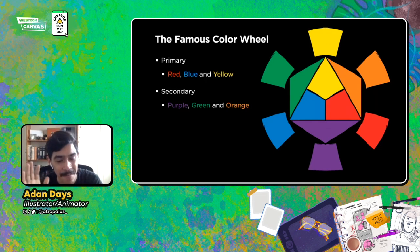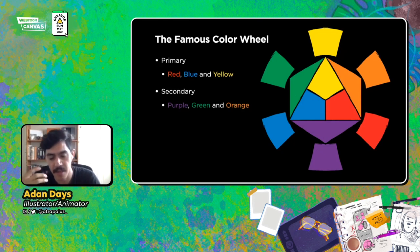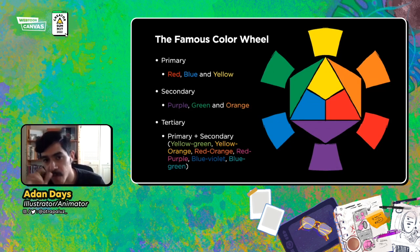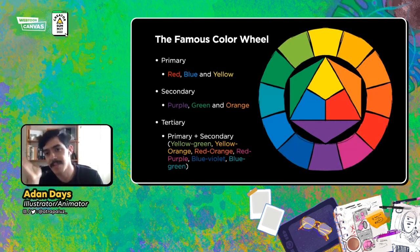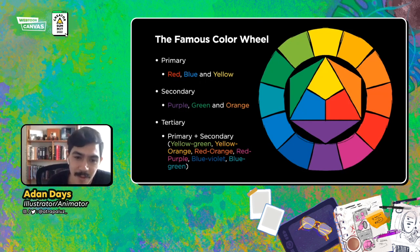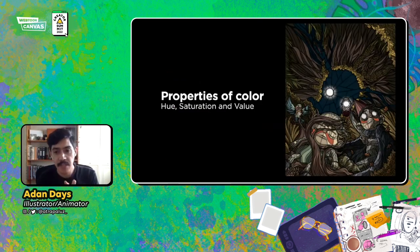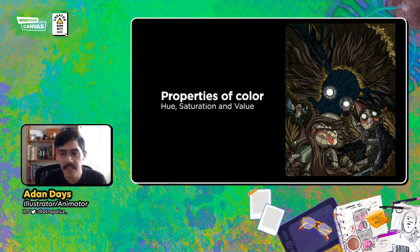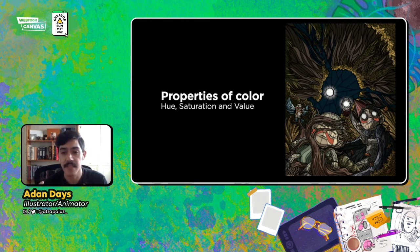Don't get too worried about memorizing all of this because it doesn't work like that — it's not helpful just to memorize it. The tertiary colors are the mix of one secondary and one primary color to fill in the gaps. It was easier for me to understand color by understanding that light is color and color is light. I strongly suggest you dissect colors into their three main properties: hue, saturation, and value.